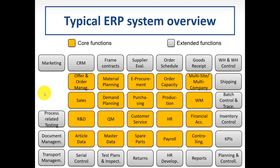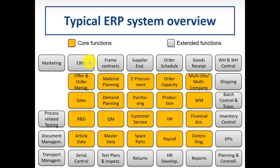A typical ERP system consists of all sorts of modules — core functions and extended functions. You would recognize acronyms like quality management or human resources, and modules like purchasing, e-procurement, demand planning, sales, and CRM extensions. ERP systems in the market exist as modules on a platform, and based on the needs of a particular business, you can attach the modules as needed.